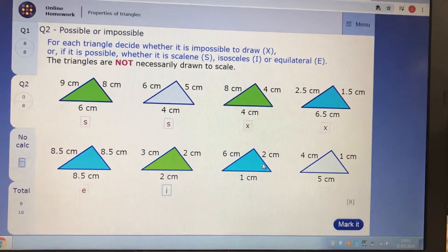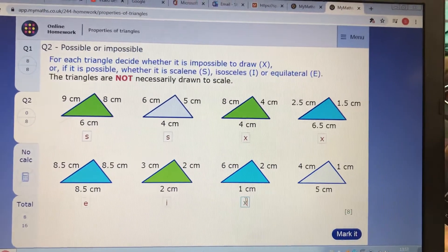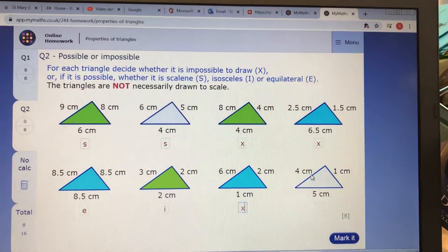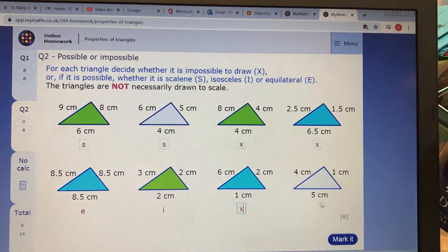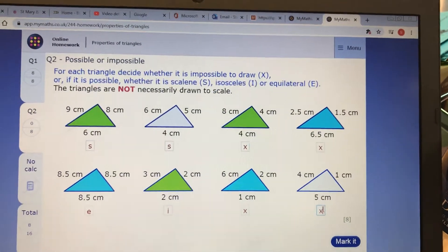2 and 1, is that bigger than 6 added together? No, it's not. It's not a possible triangle, so you're going to put that as an X. Two shortest sides, 4 and 1, is not possible because it's the same. 4 and 1 equals 5. It's not bigger, so again, that's going to be an X.